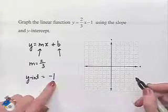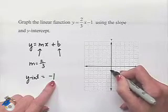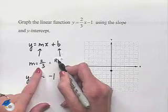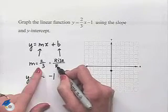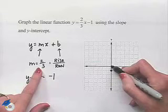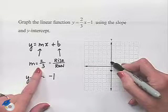We'll begin at the y-intercept of negative one and plot the point. We then use the fact that we can interpret slope as meaning rise over run, telling us that from the value at negative one, we're going to rise two units and then run three units.